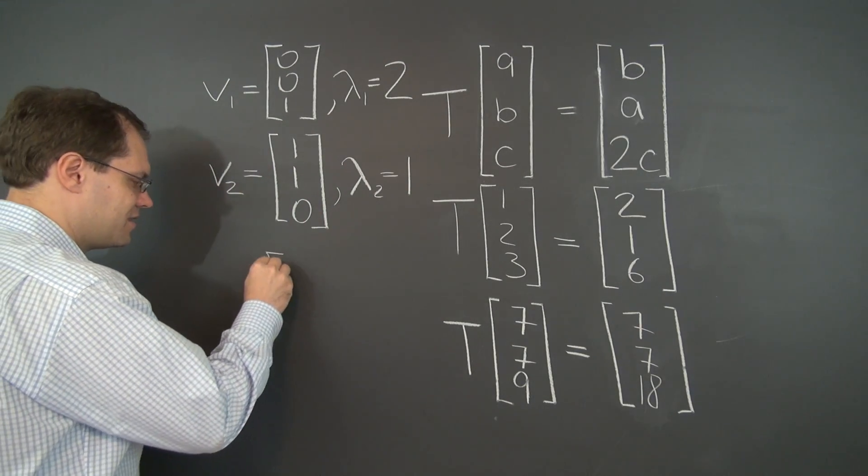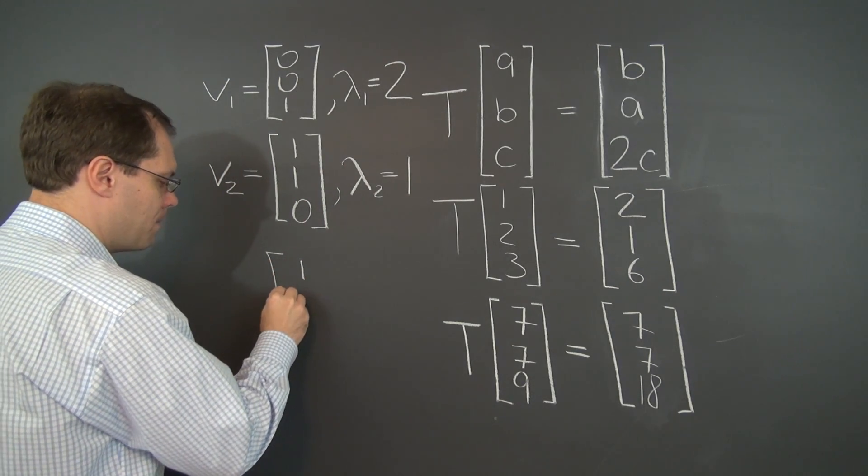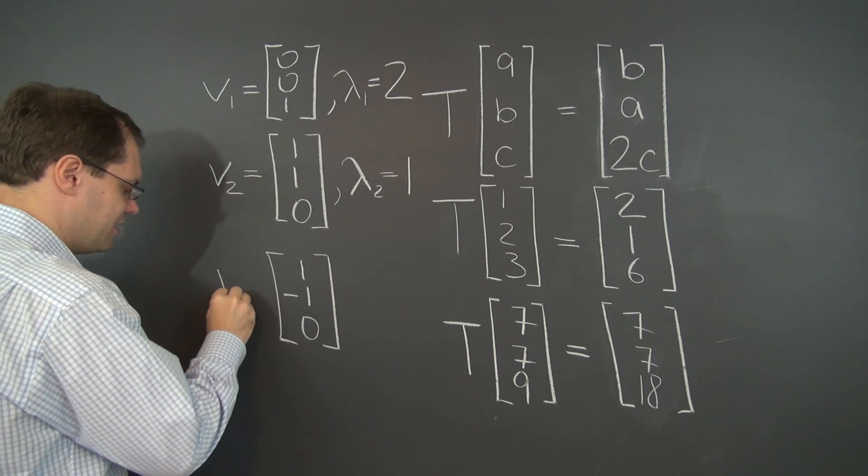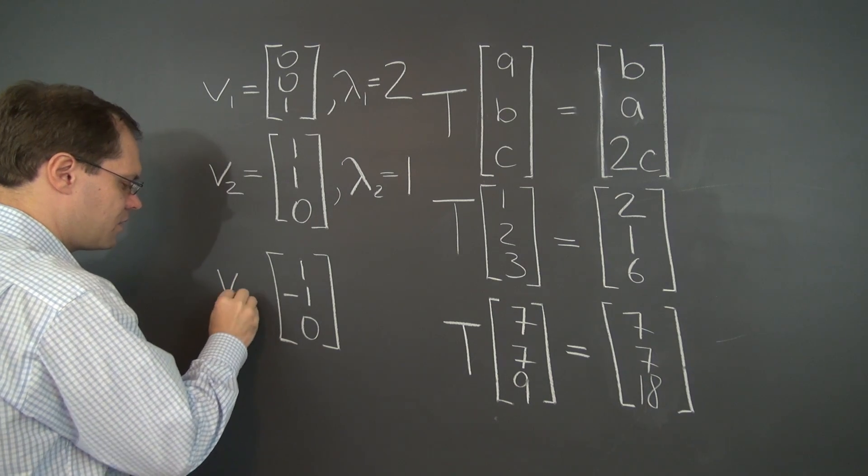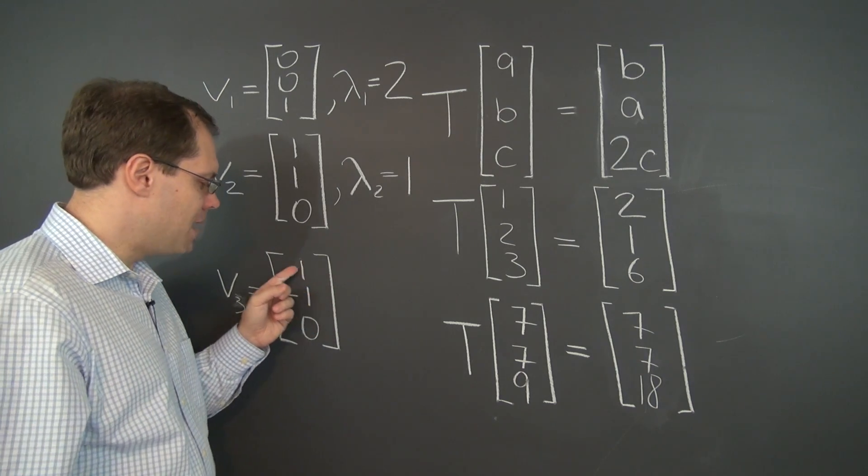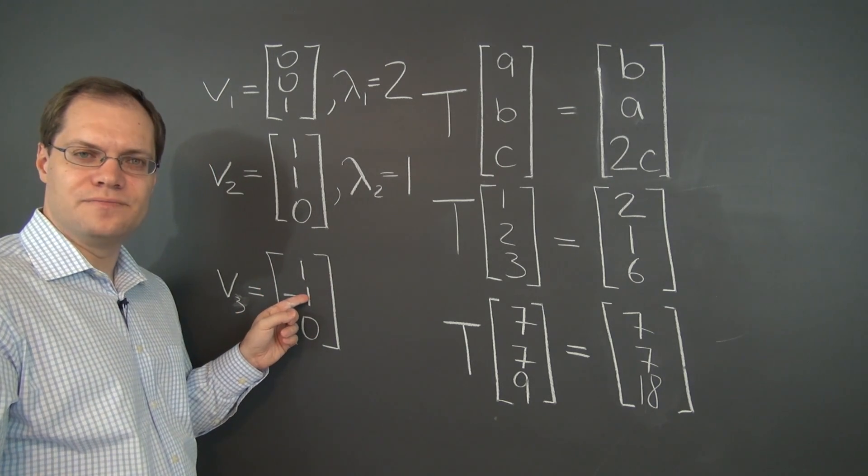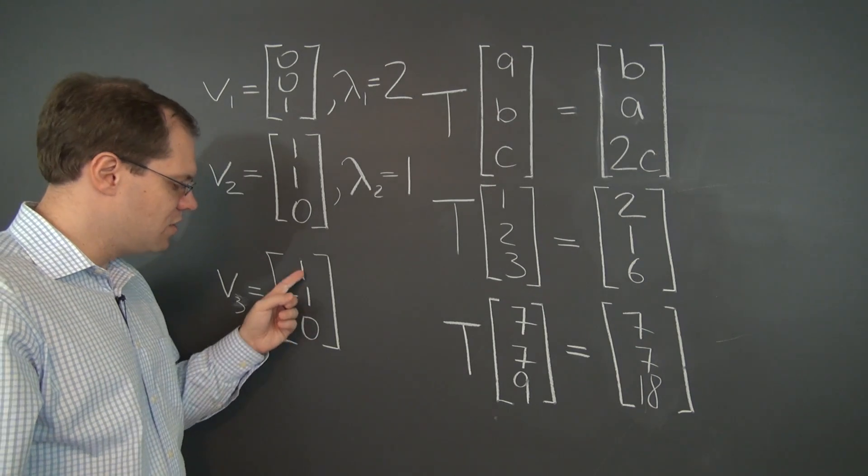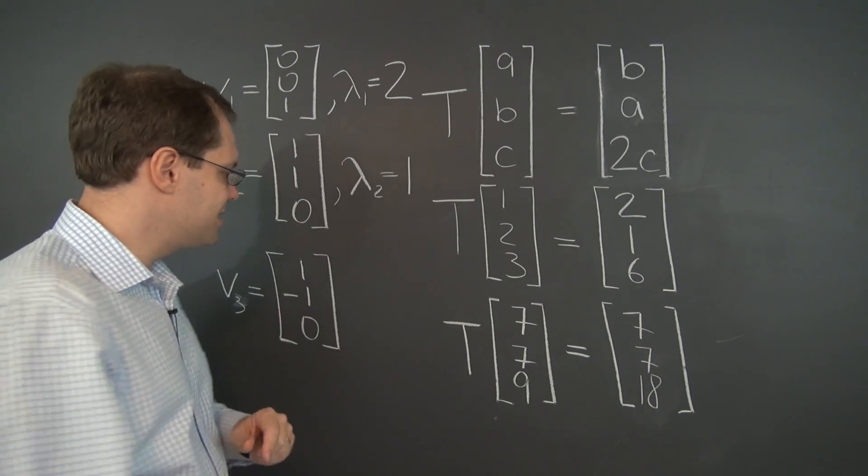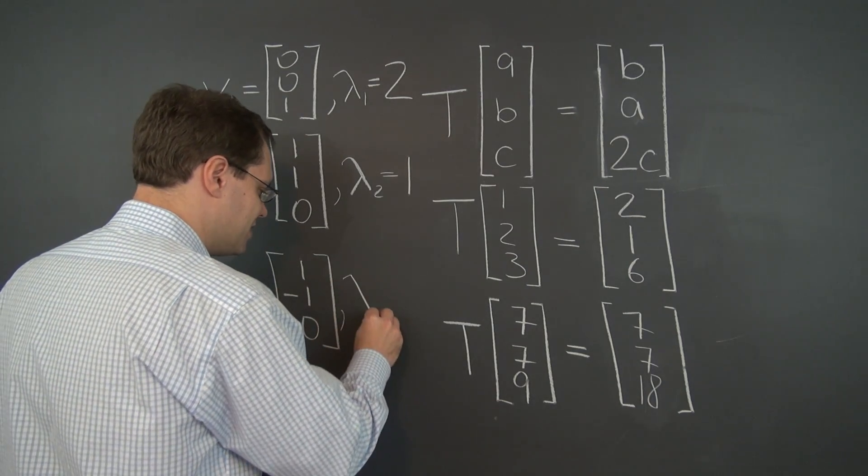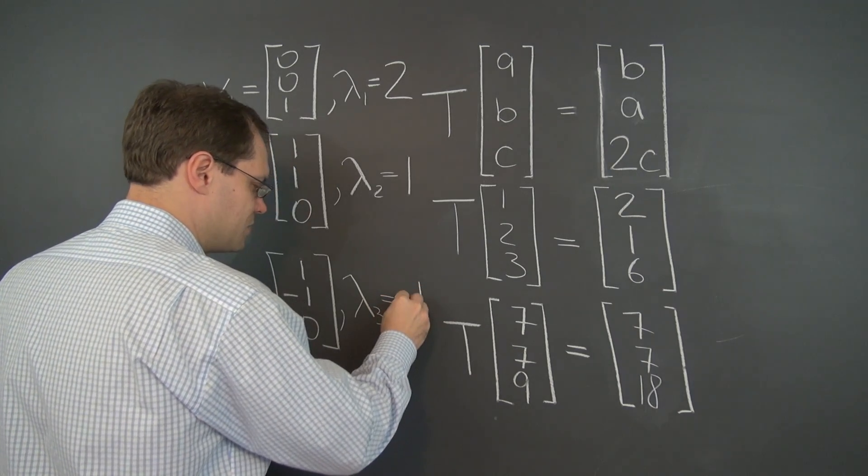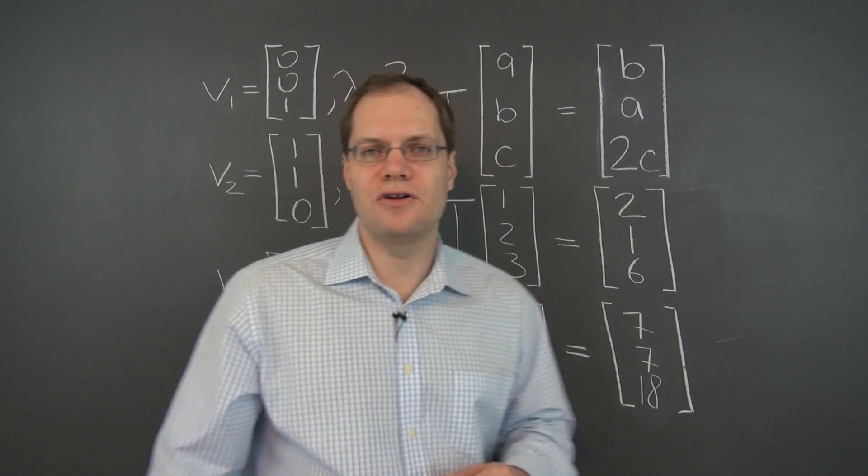And that eigenvector is 1, -1, 0. That's because under this transformation, 1, -1, 0 becomes -1, 1, 0. And is -1, 1, 0 a strict multiple of this vector? And the answer is yes, it is. And that multiple is -1. So the third eigenvalue is -1. And we have now discovered all three.